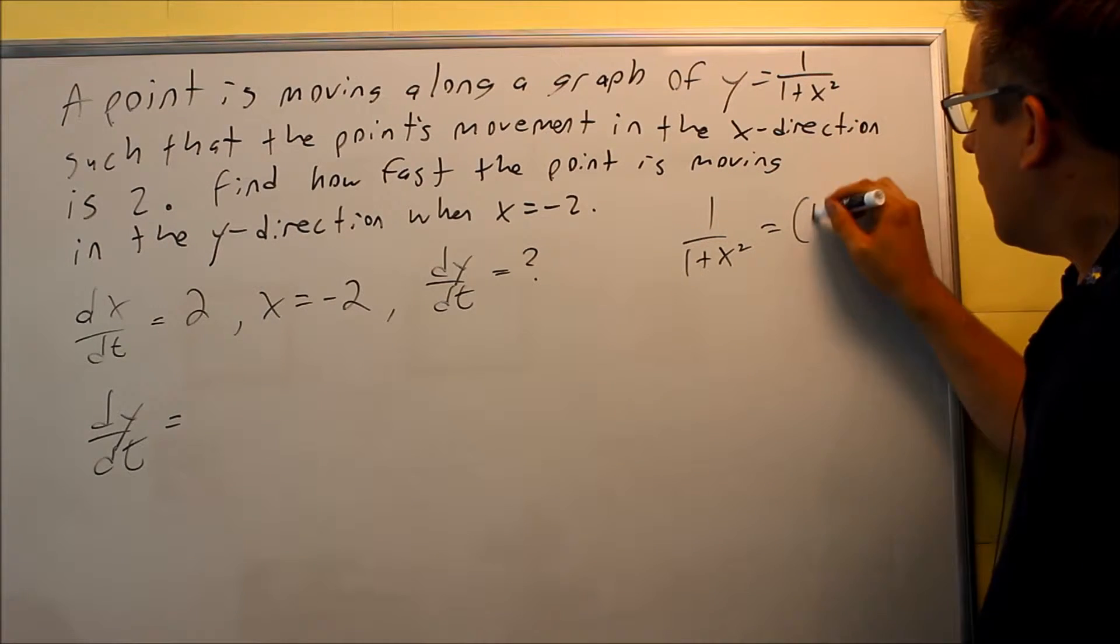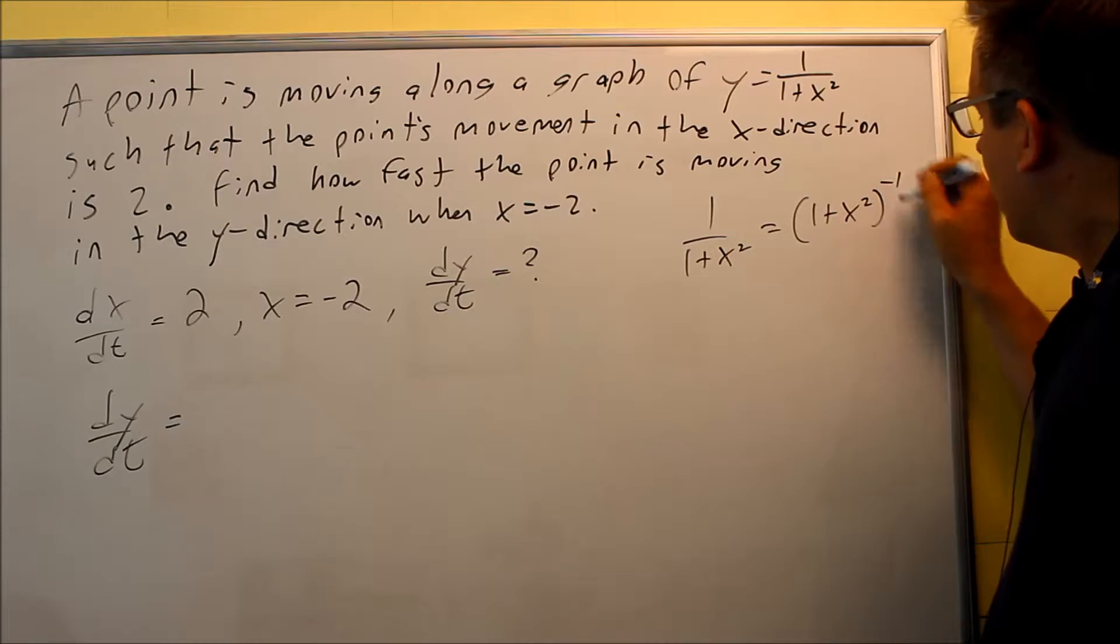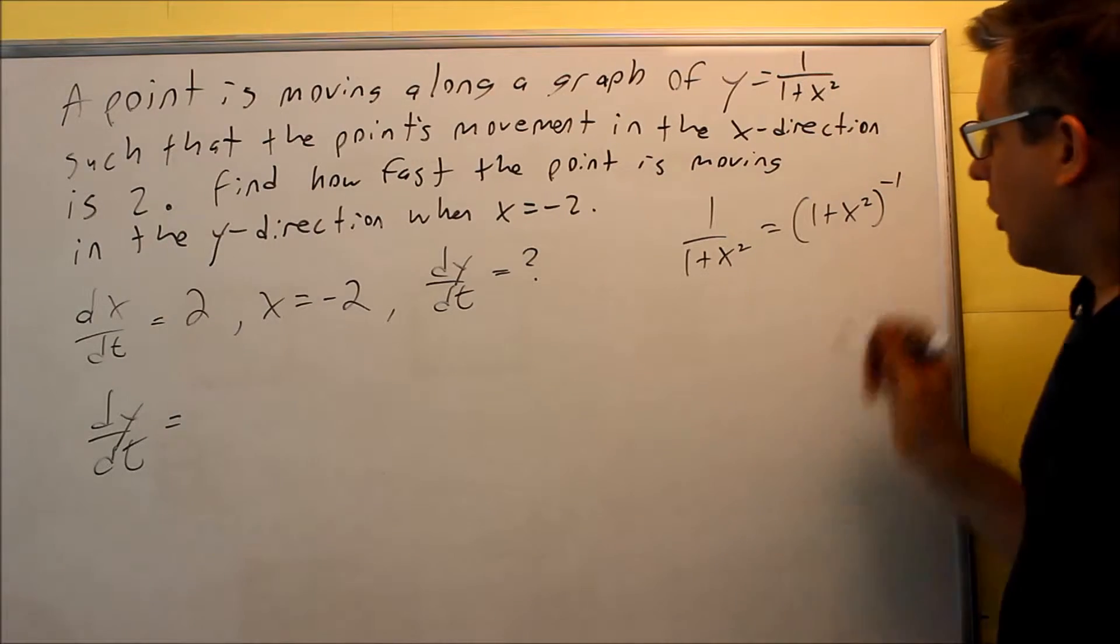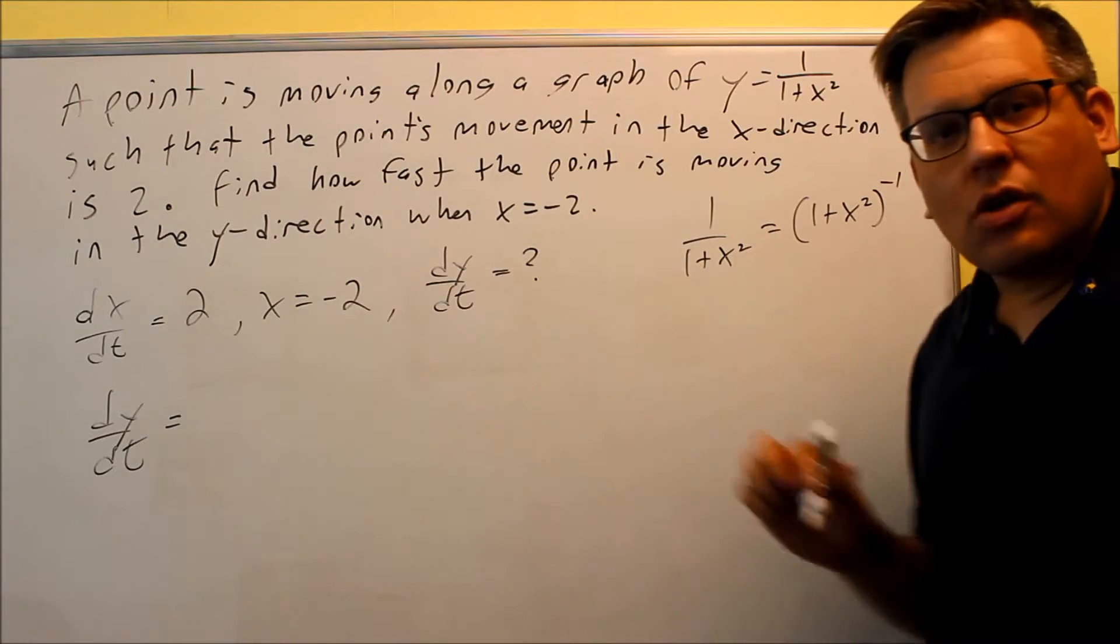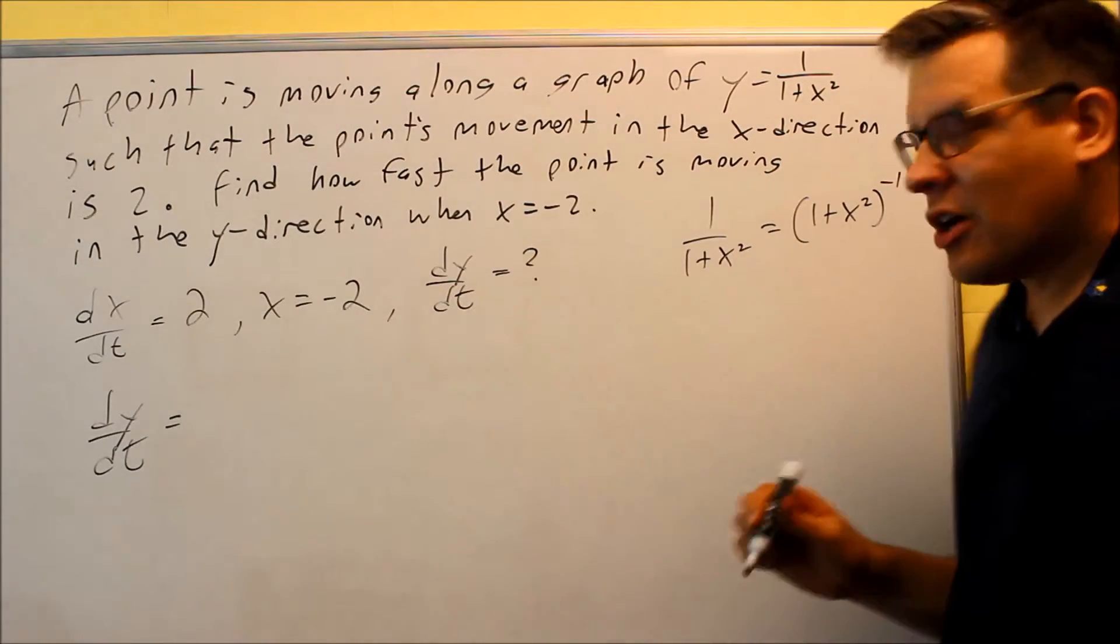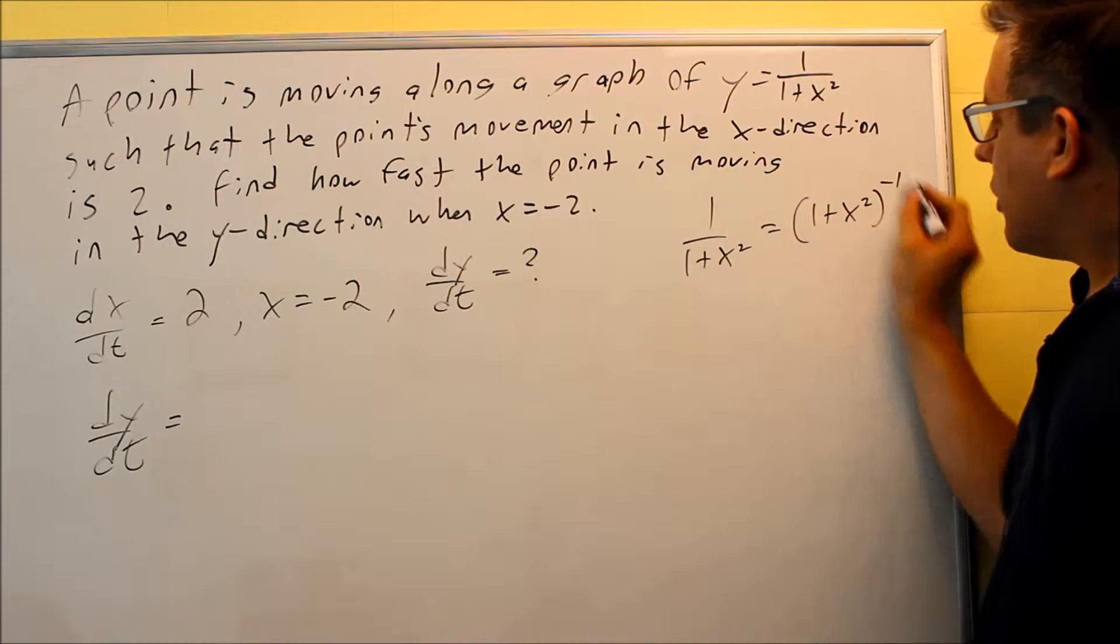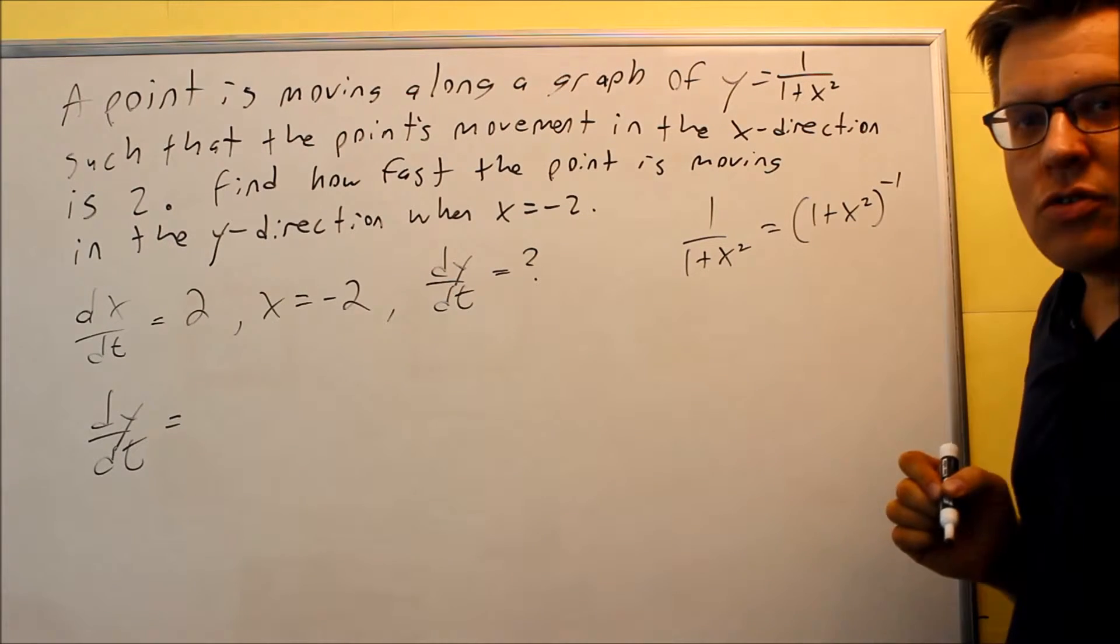Why do I want to do that? Because otherwise if I don't do that I'll have to use quotient rule when I take the derivative of this side. But instead, if I write it this way—that raised to negative 1—then I can just do chain rule.